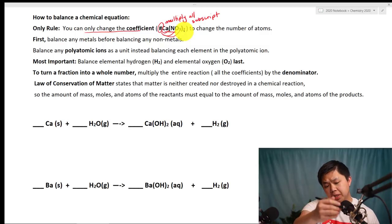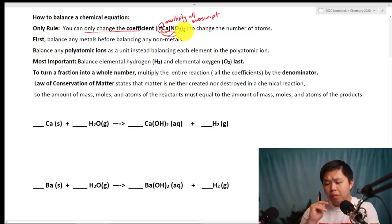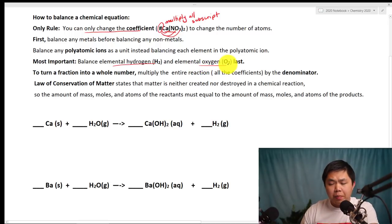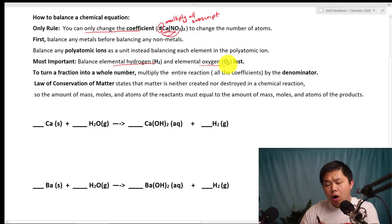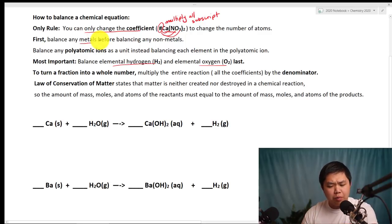Besides that rule, there is a little trick you should pay attention to. One of the most important ones is that we always want to balance elemental hydrogen or elemental oxygen last. That means we're going to save it last. We are going to balance other elements first, especially metals. So let's do an example problem.